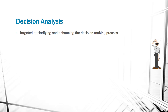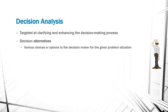What we're looking at is trying to clarify and enhance our decision making process. What decisions are we going to make based on buying a certain product, selling a certain product, building at a certain site, expanding, and so on. We have these decision alternatives — these are just our various choices or options that the decision maker can make, such as maybe expand or rebuild.